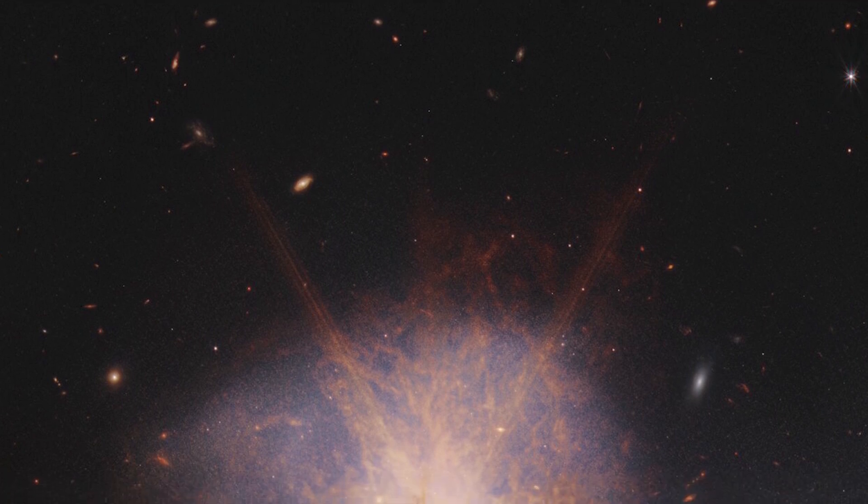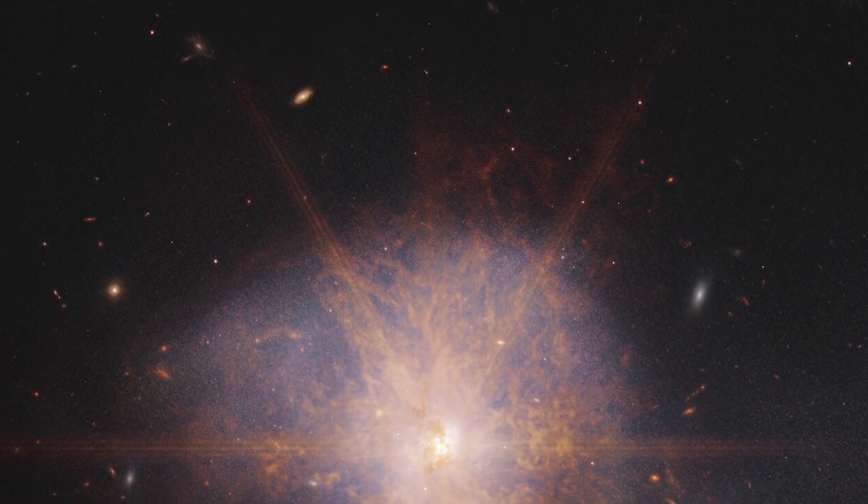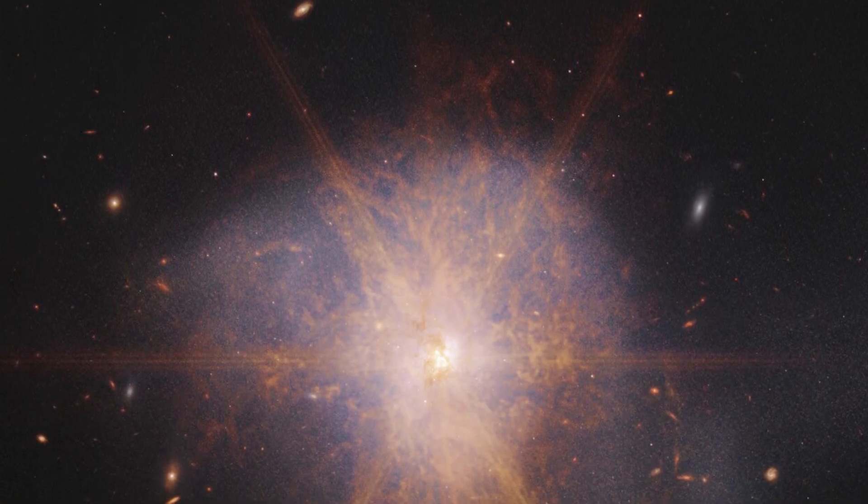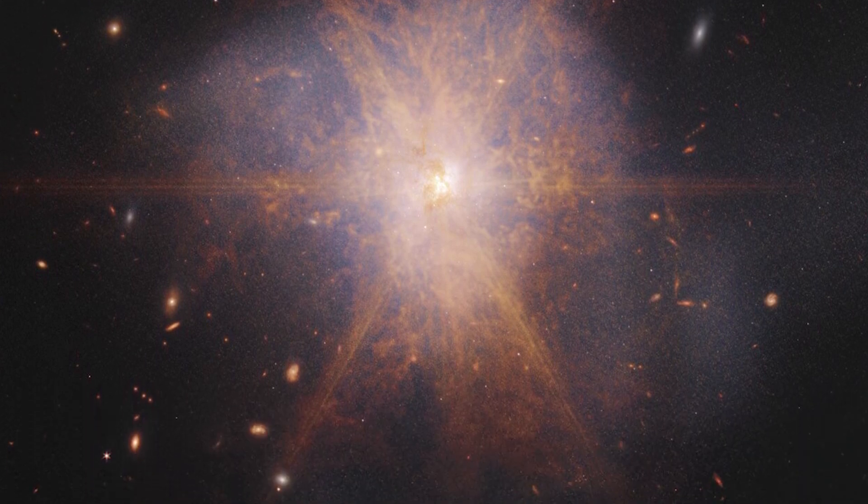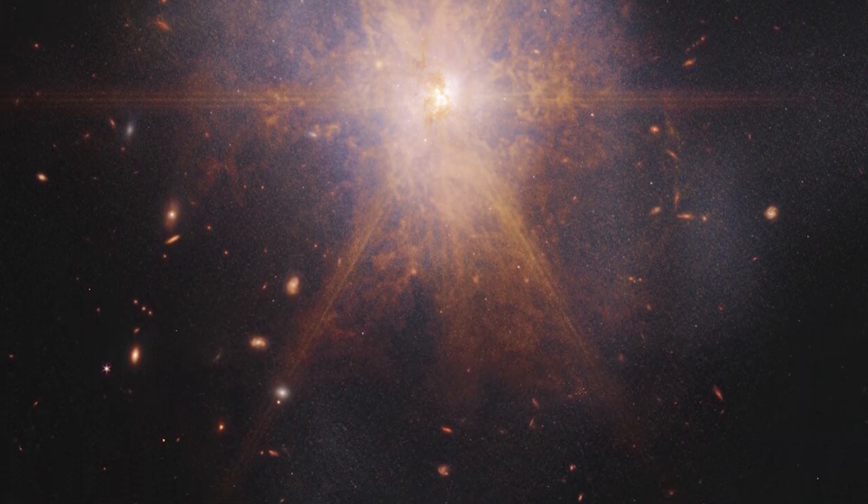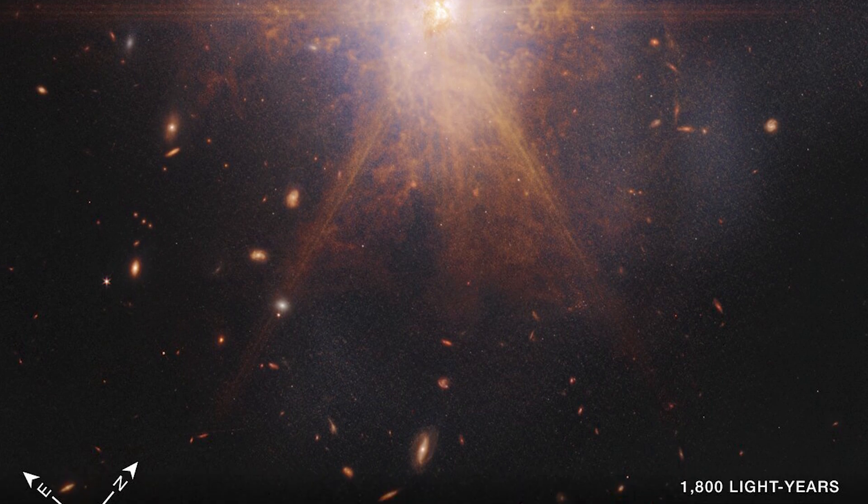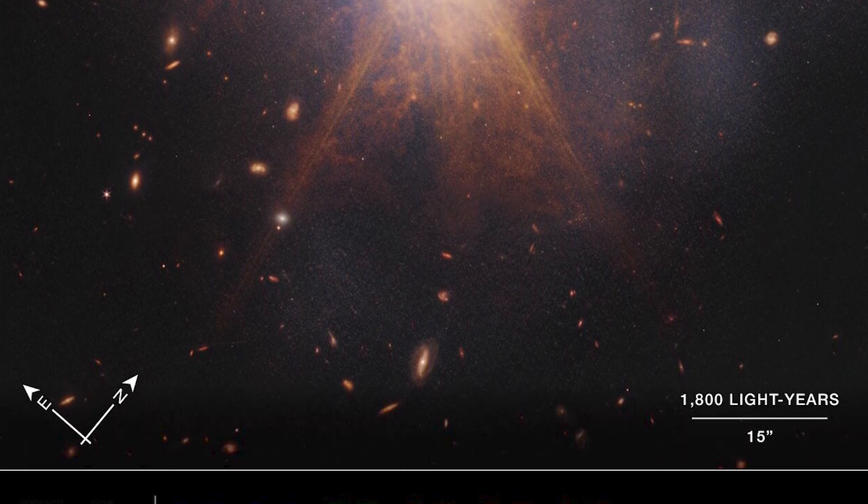This impressive galactic merger can be seen shining among other galaxies in the night sky. When two spiral galaxies merge, the phenomenon known as ARP 220 shines brightest in the infrared, making it perfect for observation by the James Webb Space Telescope.